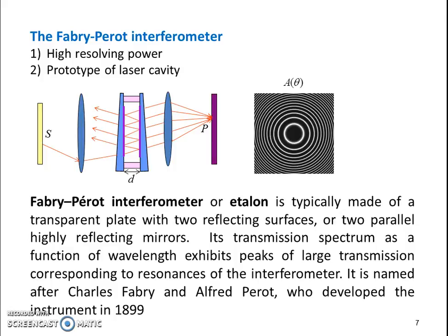Now using this multiple beam reflections principle, the Fabry-Perot interferometer is designed, which has high resolving power and is used for a laser cavity. A Fabry-Perot interferometer or etalon is typically made of transparent plate with two reflecting surfaces or two parallel reflecting mirrors.